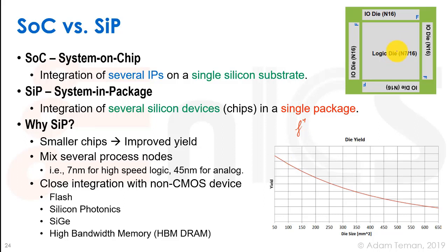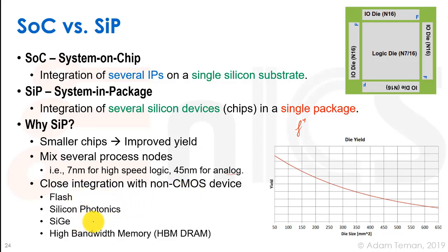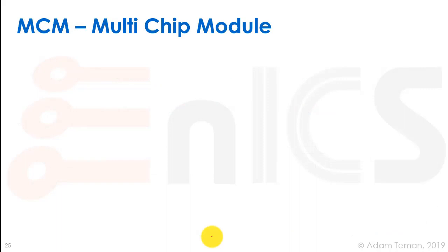Second, we can mix several process nodes. In our example, we could make our logic die with a 7 nanometer process for the highest speed, while our IOs could use an older, cheaper process. We could also use an older technology for analog components. Furthermore, we can have close integration with non-CMOS devices, such as flash, silicon photonics, silicon germanium, or high bandwidth memory.